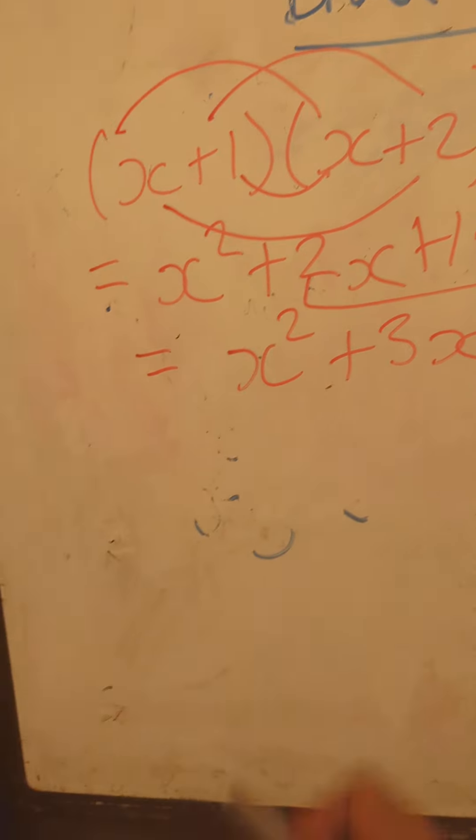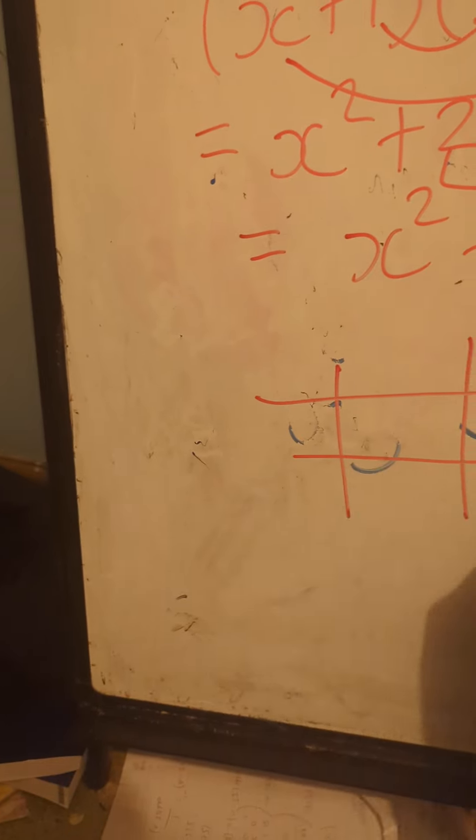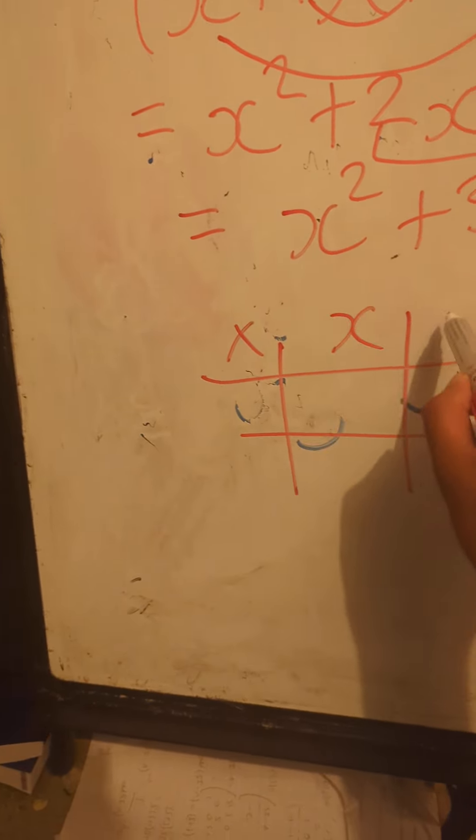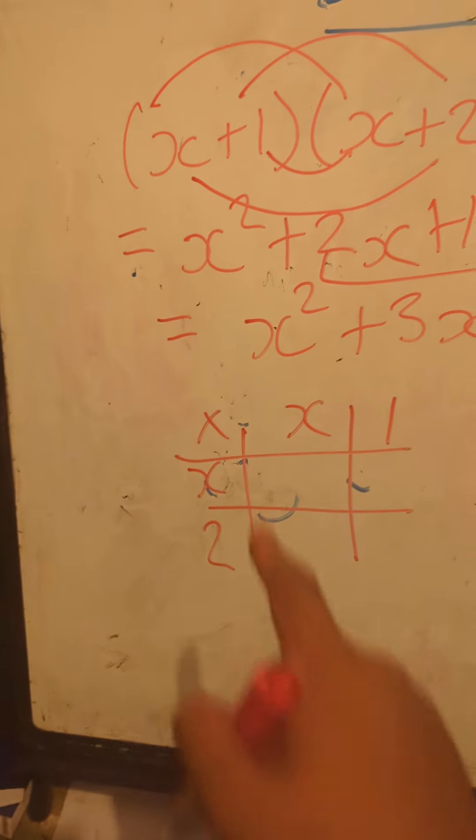I'll also do it via the grid method in case you're struggling with that method. So I'll put a times sign there, x and 1, x and 2. It doesn't matter which way it goes.